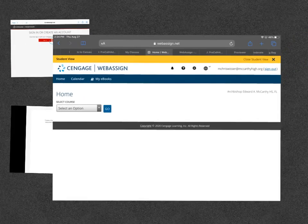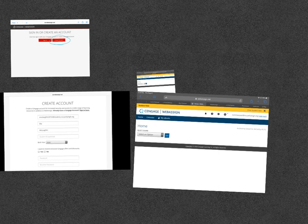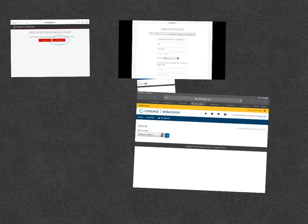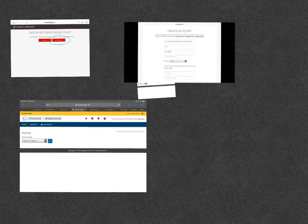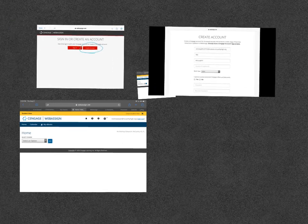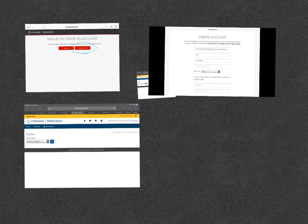Okay, then when you get into WebAssign, you should be looking at something like this screen. Okay, from the drop down menu where it says courses, you should only have Algebra 2, so you're going to click on Algebra 2.